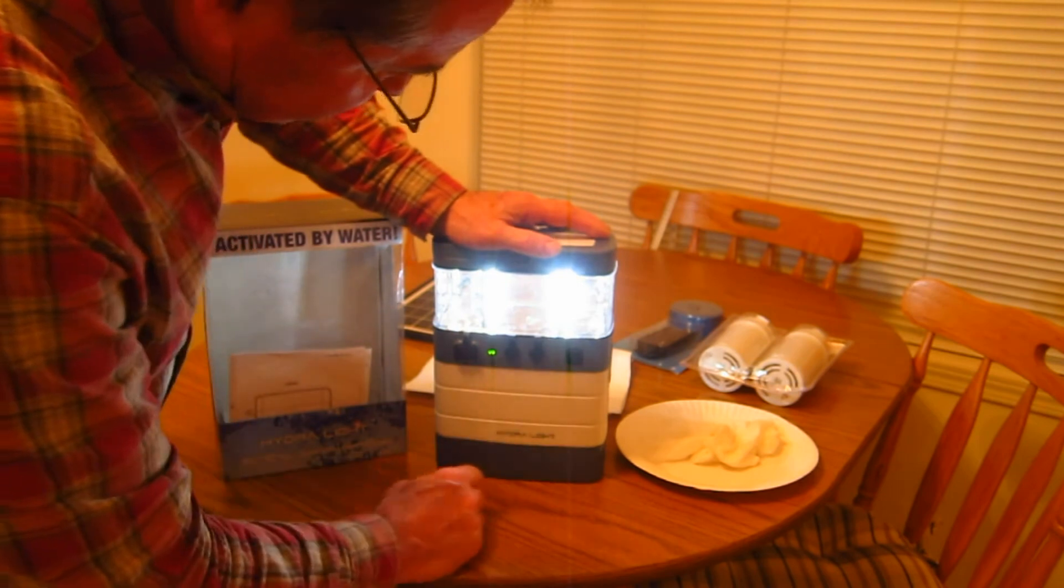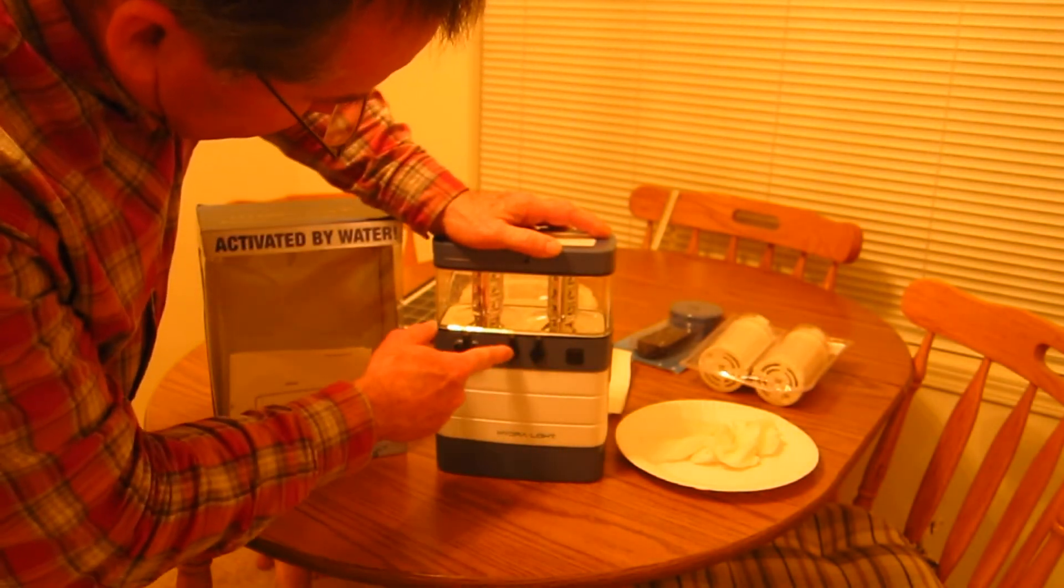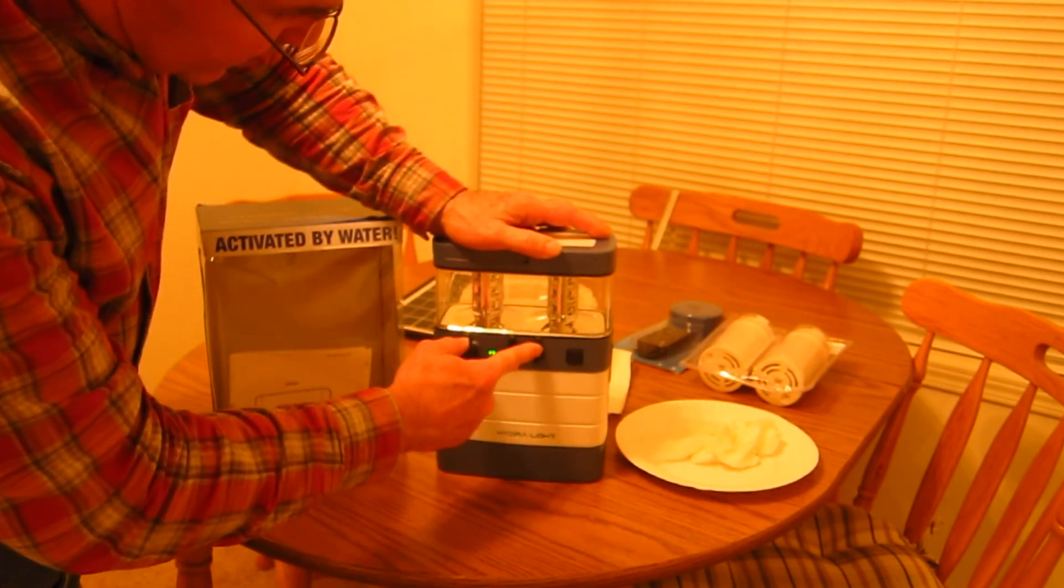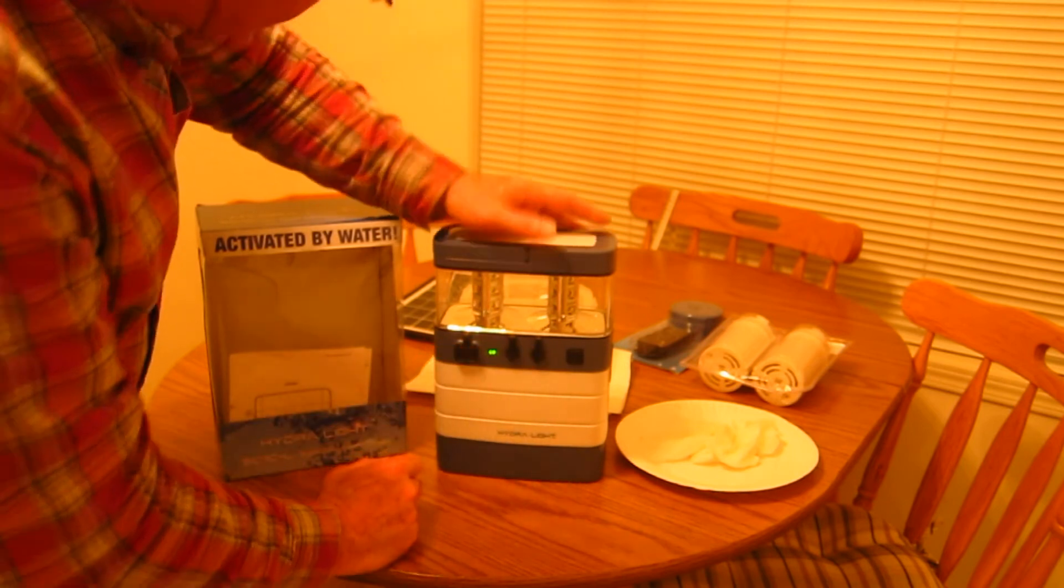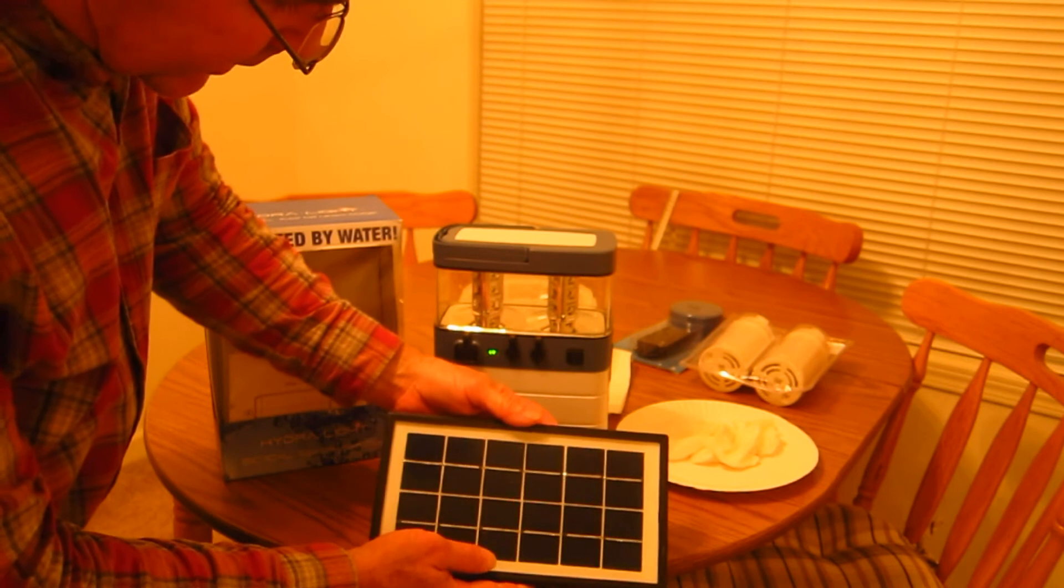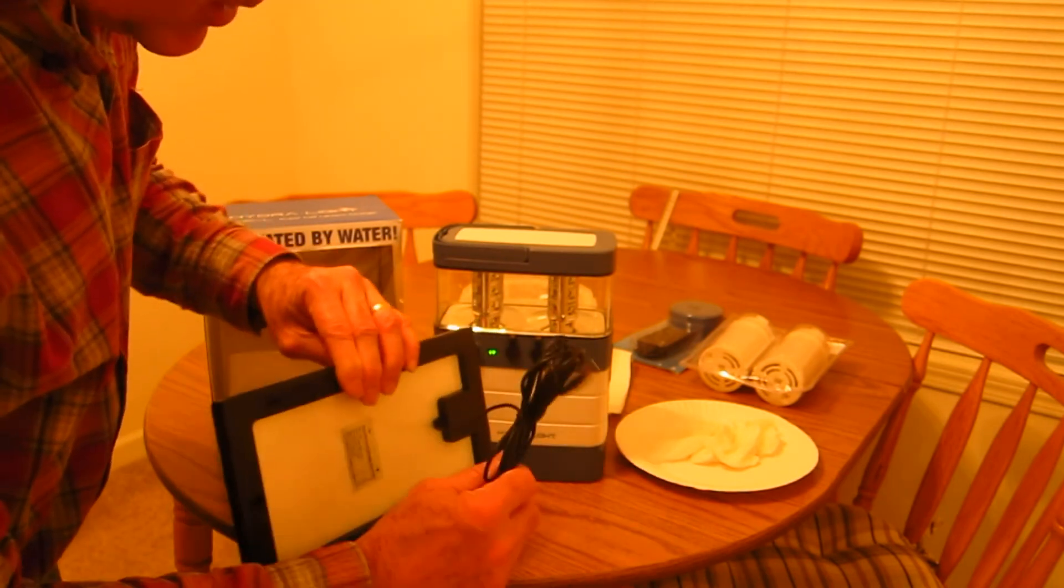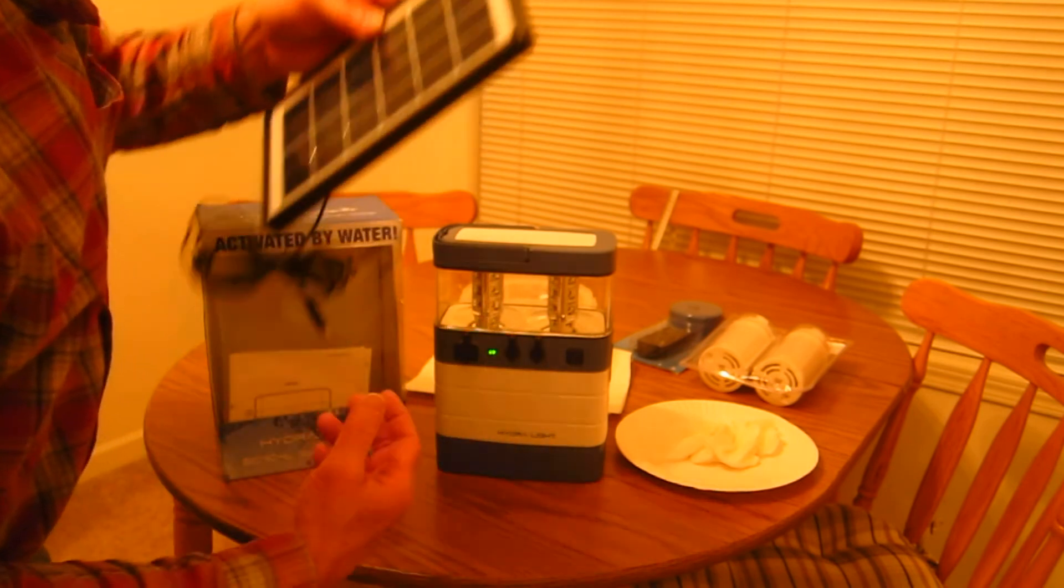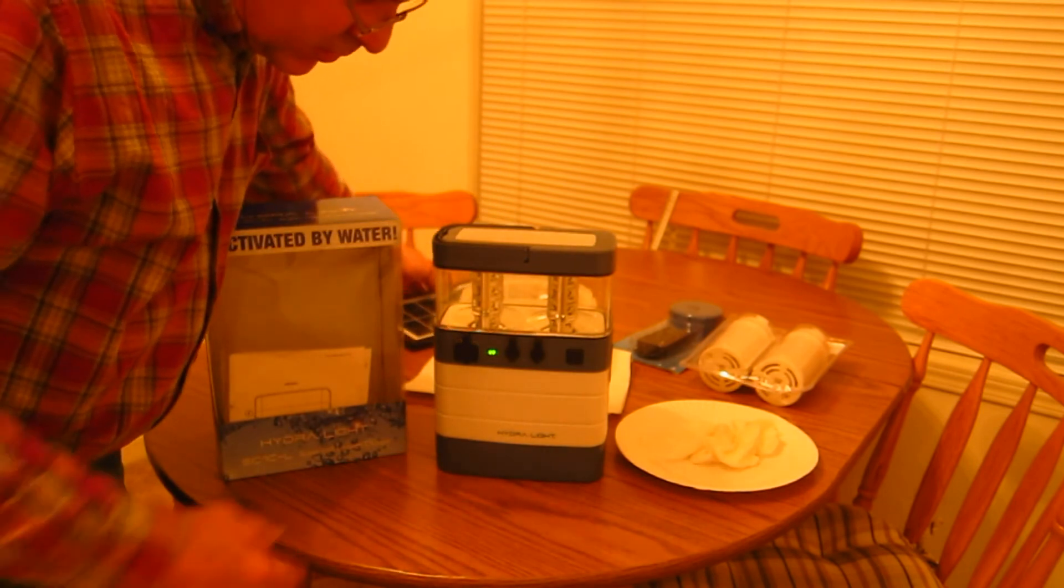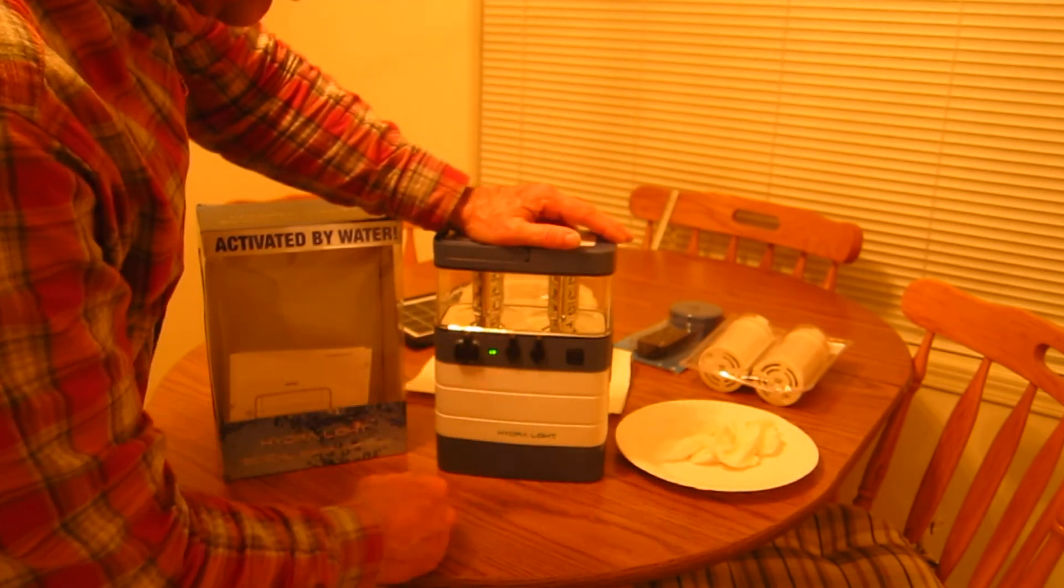And basically three position switch. One is off. The other activates this port to charge devices. And again this port here is for the solar panel, to basically recharge the internal lithium ion battery. That's this here with the cord and plug. Plugs into the front. And you've got an indicator here. If it's red it's in charging mode. If it's green it means you can charge devices with this port here.